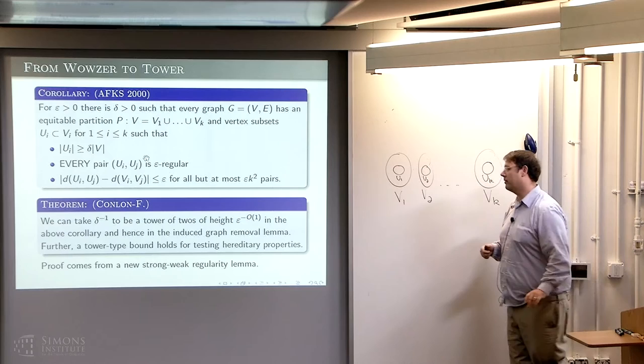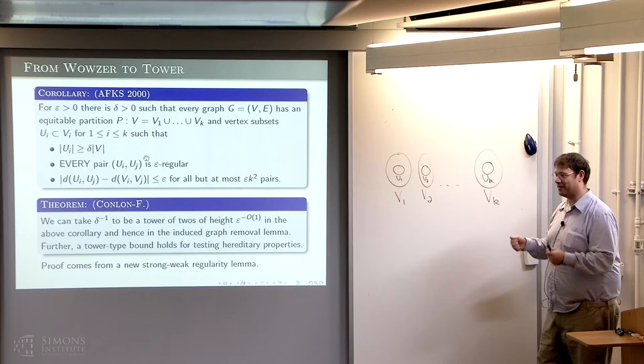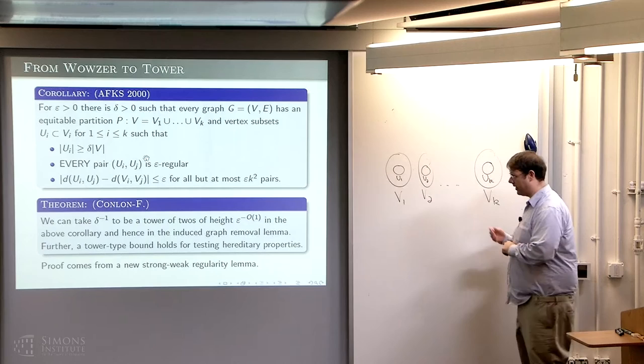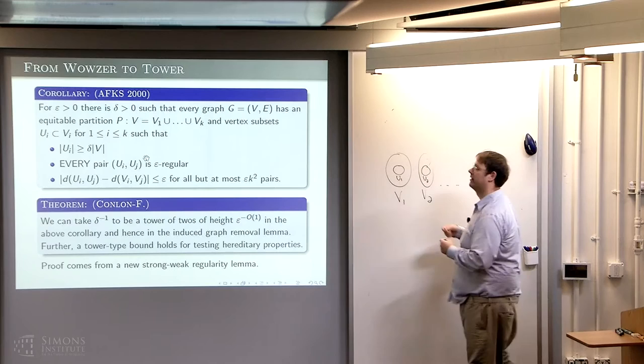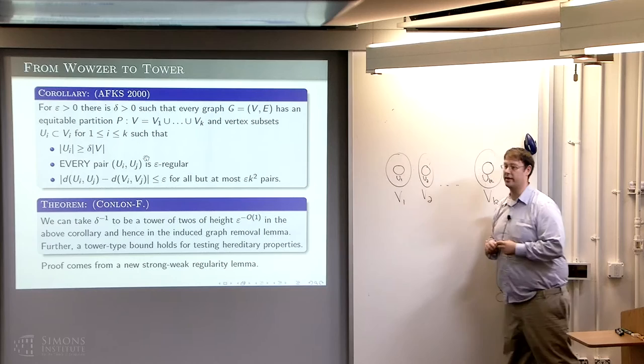How does the tower-type bound come from the proof? The proof of the strong regularity lemma was to take the usual regularity lemma and repeatedly apply it. There's a weak regularity lemma of Duke, Lethman, and Rudel — in the same vein as the regularity lemma of Fries and Cannon — which gives a single exponential bound. Repeatedly applying that regularity lemma gives a strong version with a tower-type bound, and using it carefully you can prove the corollary and get better bounds for graph property testing problems.